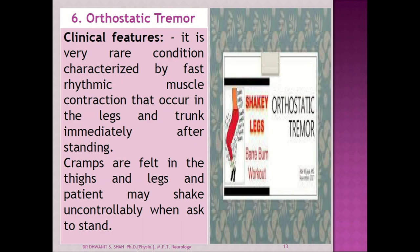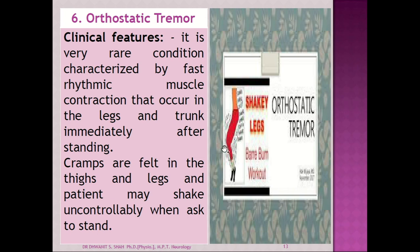The sixth type is orthostatic tremor. It is a very rare type of tremor. It is identified by fast rhythmic muscle contractions occurring in the legs and trunk immediately after standing. When the patient starts standing, you can find this shaking movement in the knee or above-knee muscles. Cramps are felt in the thigh and legs, and the patient may shake uncontrollably when asked to stand. When walking, no tremor is felt, but when standing still in one place, this tremor occurs in one or both legs — it is called shaky legs syndrome.